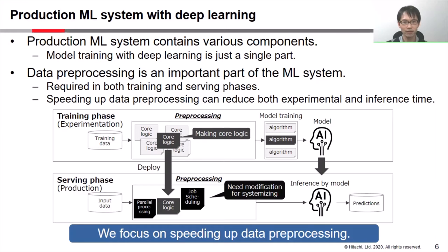In the serving phase, the machine learning system provides predictions using a trained model in a production environment. In this phase, the model requires the same format of input data as during training. So we need to deploy the same data preprocessing logic as in the training phase.